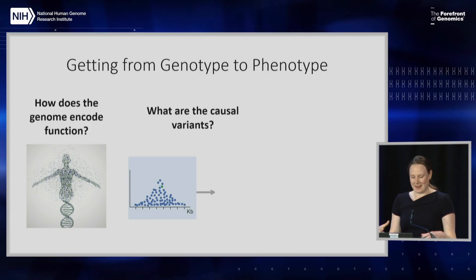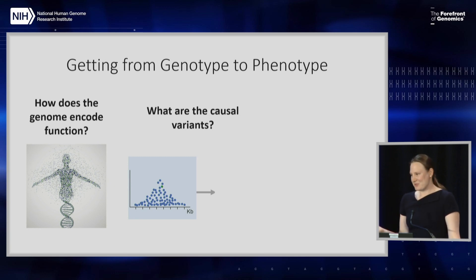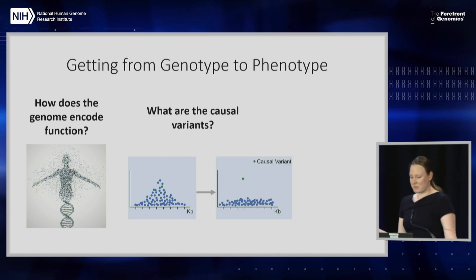The second thing we need to do is go from association and a collection of variants to finding causal variants. If we look at a region of the genome where we think there's an association, we see an array of potential variants that are having an impact. Somewhere hidden in these inert variants are the causal variants — how are we going to get to them?